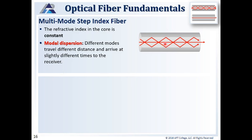In multi-mode step-index fiber, we have two different refractive indices. The refractive index of the core is the same all the way through the core down the length of the fiber, and the refractive index of the cladding is the same all the way through the cladding. Modal dispersion occurs when light is traveling different paths and thus different distances — the higher order modes are traveling longer distances than the fundamental mode traveling down the center.